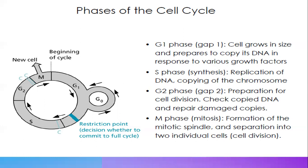To stimulate the cell cycle to start and stop, certain growth factors must be present. We are discussing this because we need to understand how the normal cell cycle occurs and why cancer cells are produced. In S phase, synthesis involves replication of DNA and copying of chromosomes. G2 phase involves preparation for cell division, checking copied DNA, and repairing damaged copies — a very important step. The last is M phase, the mitosis phase, involving formation of the mitotic spindle and separation into two individual cells.